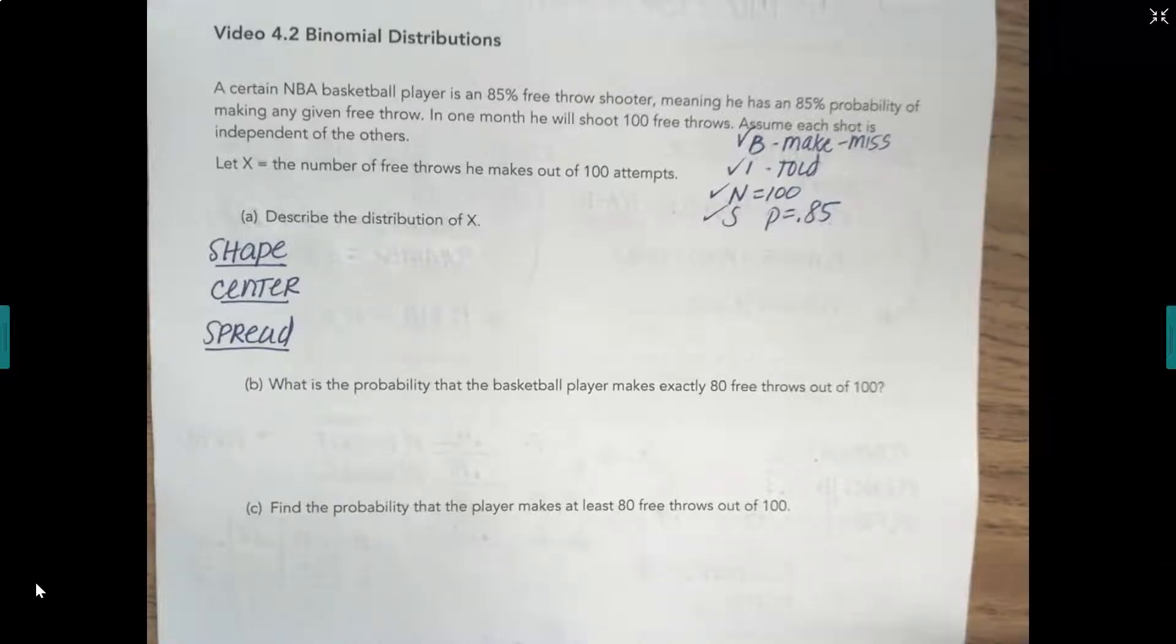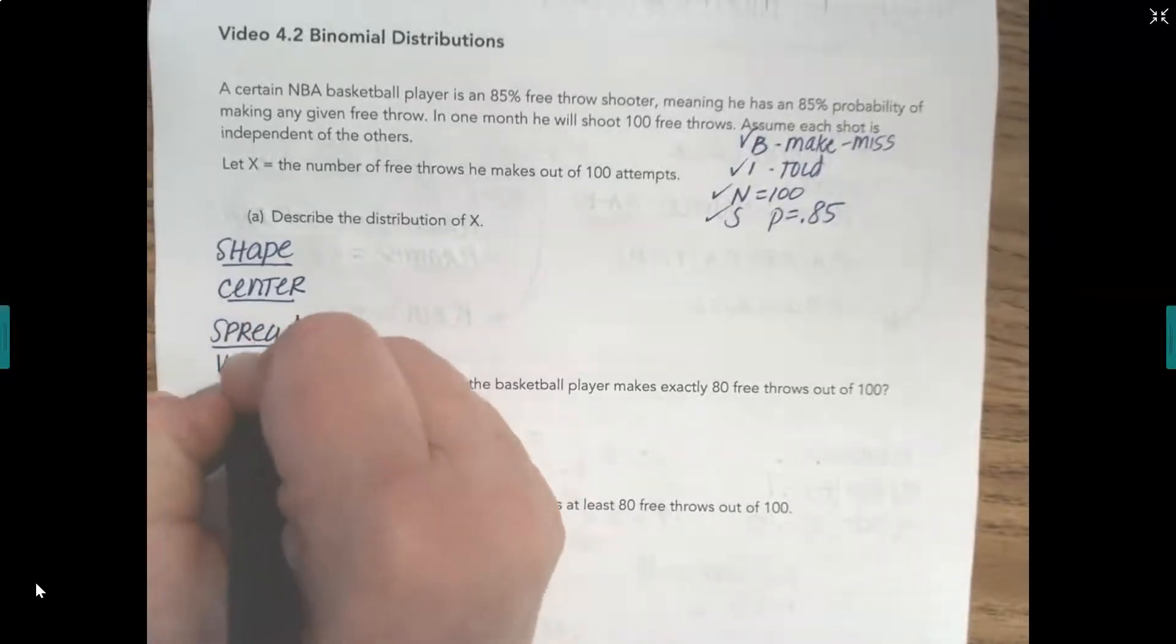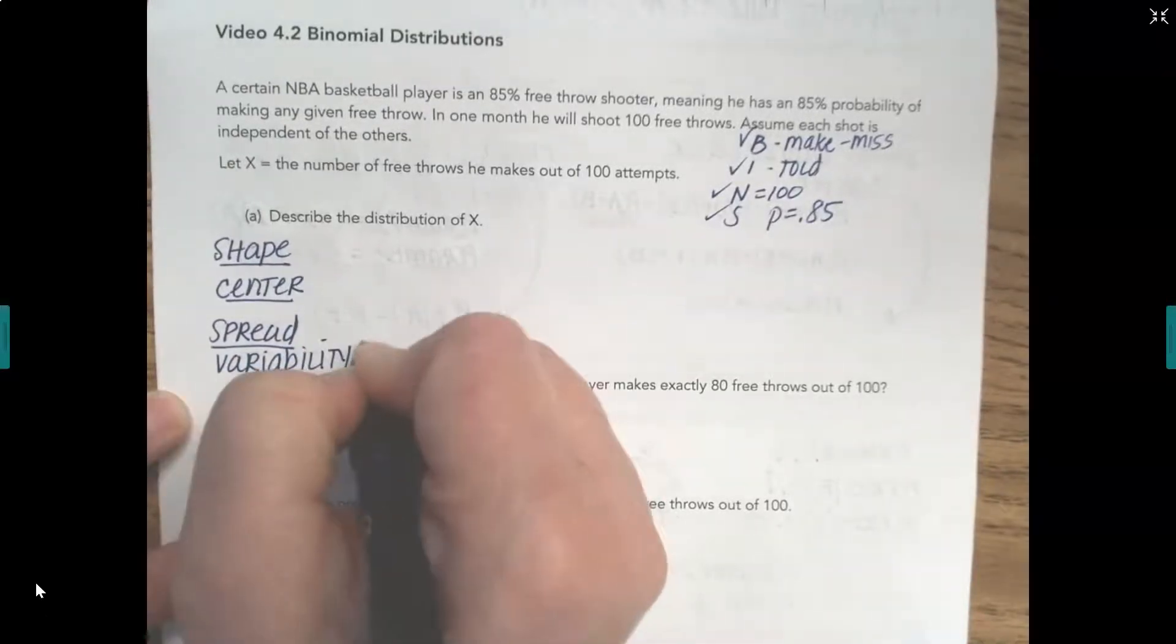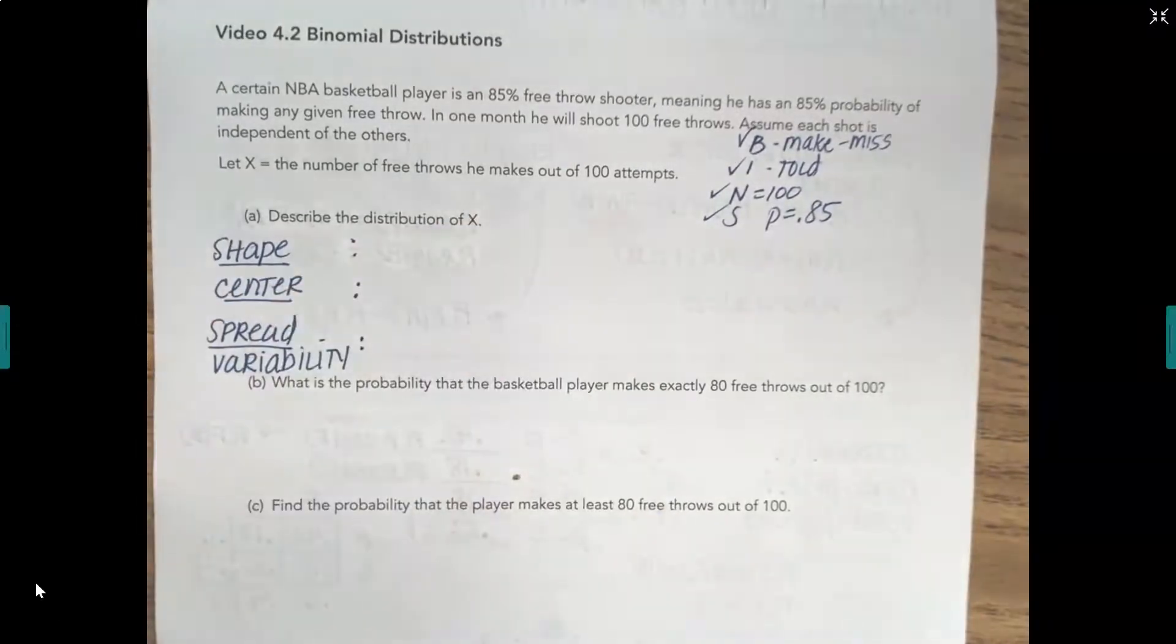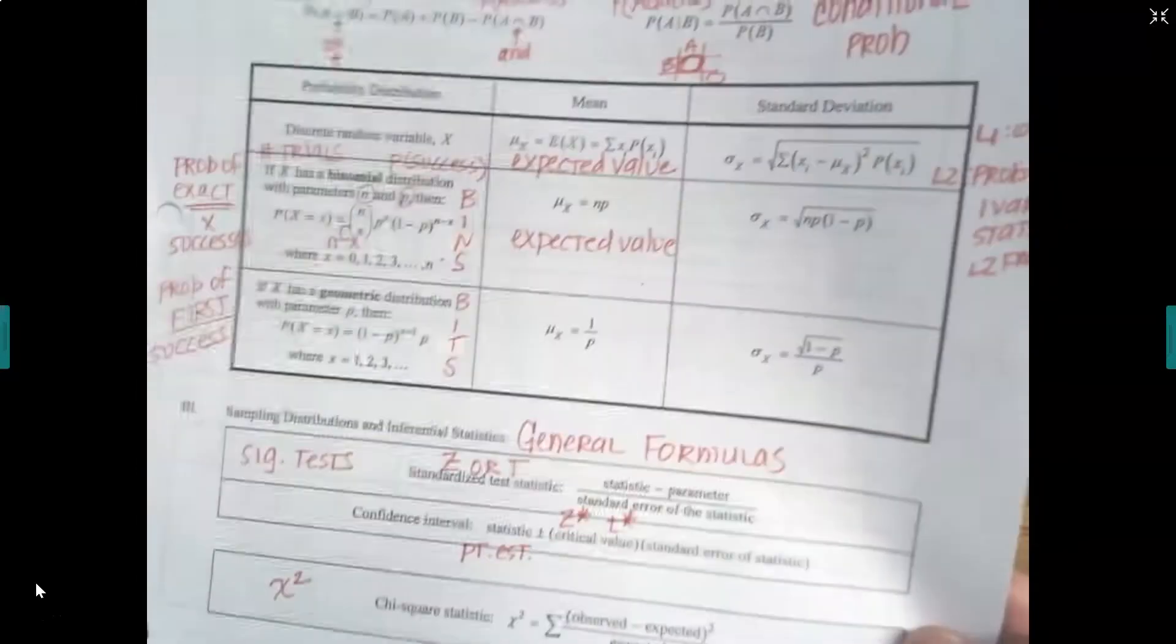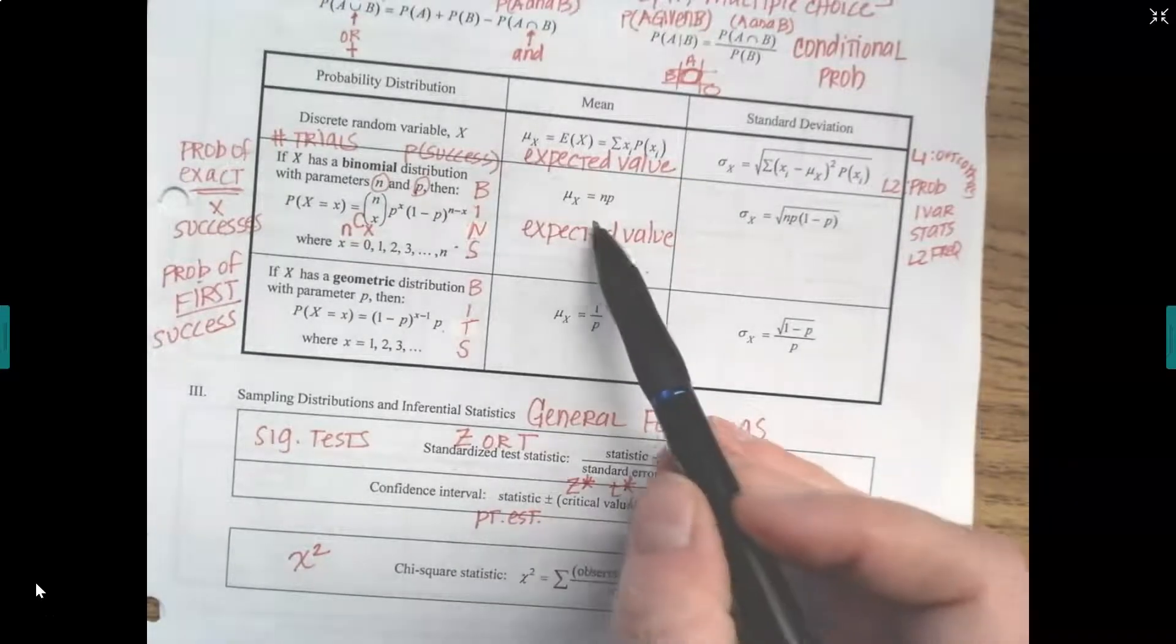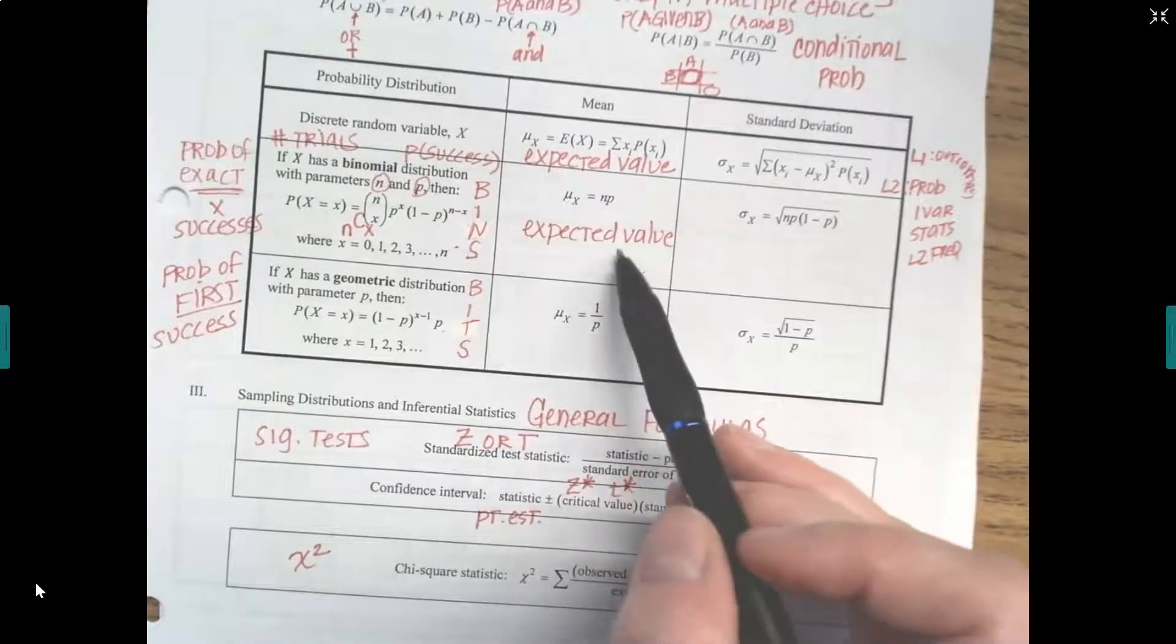So now we know that this is a binomial. And why that is important is because when I go to talk about the shape, center, and spread or the variability, variability is a word we used a lot when describing spread, that's where I get my information from. I'm going to skip the shape for right now and talk about the center. The center would be the mean in a binomial distribution. To find the mean, it's N times P. That's our expected value.